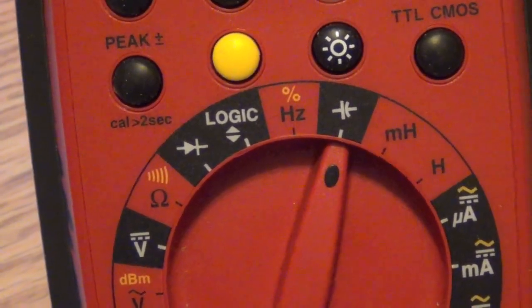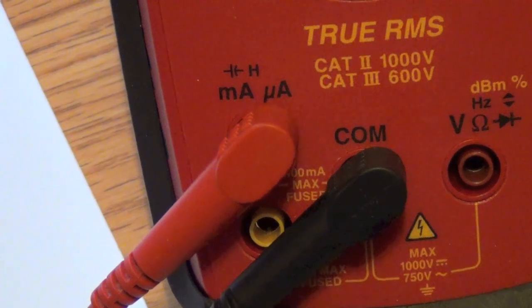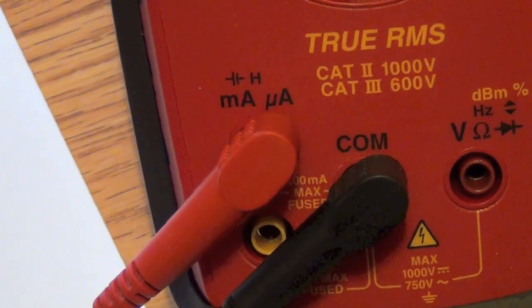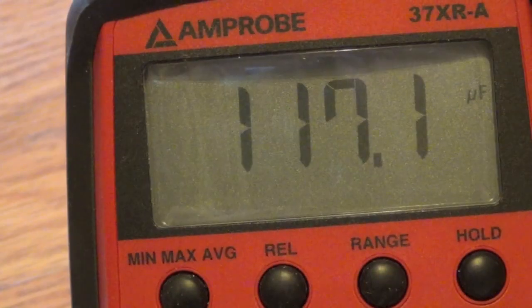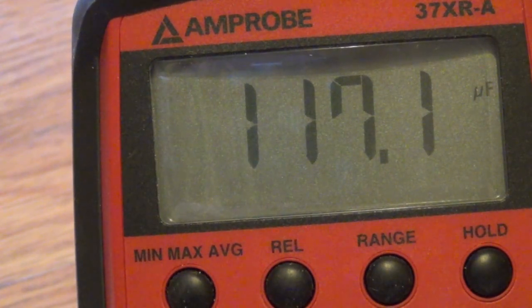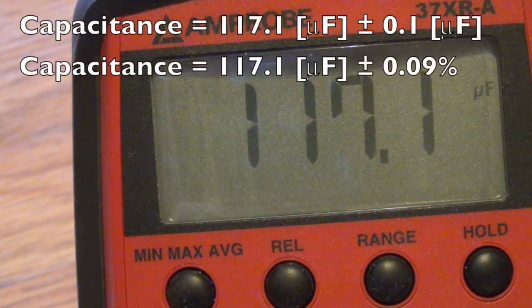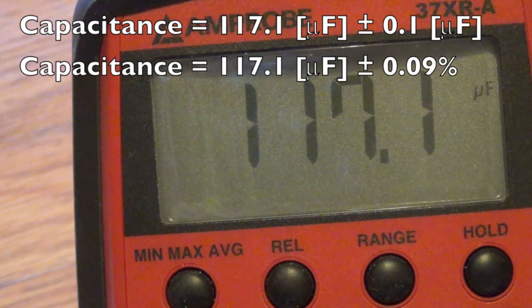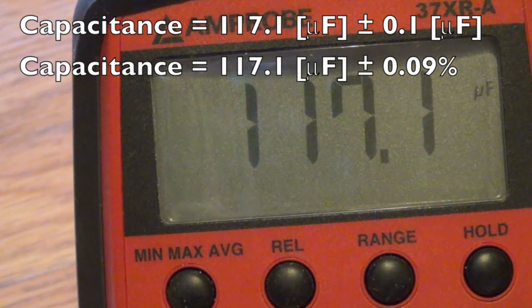The uncertainty in this measurement is 0.1 microfarad, so we would record this measurement as 117.1 microfarads plus or minus 0.1 microfarad.